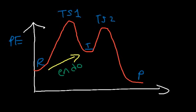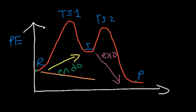Now what about the second step as we go from intermediates to products? Notice that it's going down the potential energy diagram, so the second step is an exothermic step. Now what about the reaction overall? Going from reactants to products, we're going down the potential energy diagram, so the overall reaction is still exothermic.